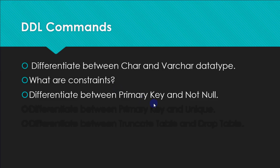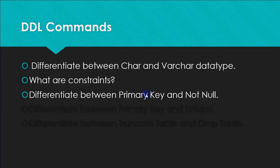Differentiating between PRIMARY KEY and NOT NULL: PRIMARY KEY means the attribute cannot have duplicate values and cannot be left blank, whereas NOT NULL only says you can't leave it blank — duplicates are allowed. A second difference: there can be only one primary key in a table, but the NOT NULL constraint can be given to as many columns as you want.